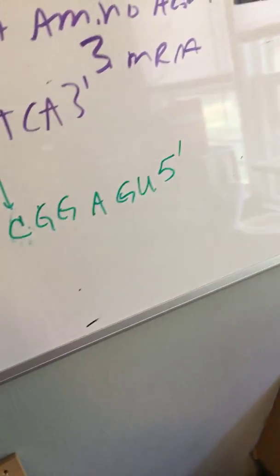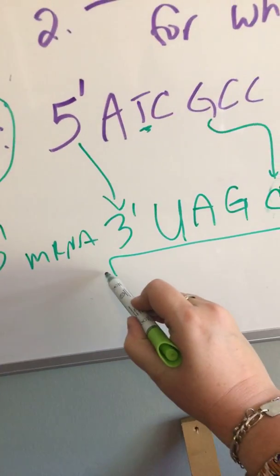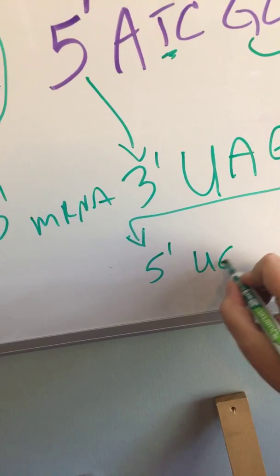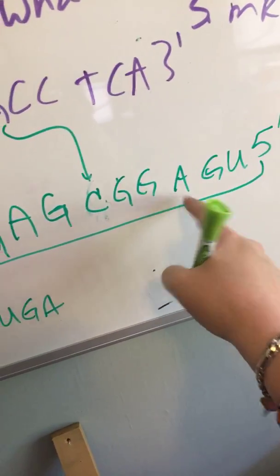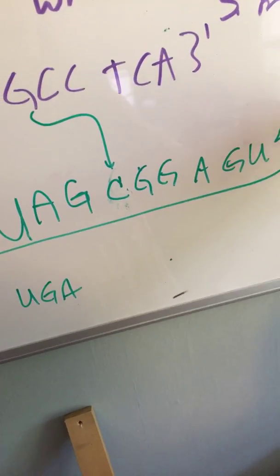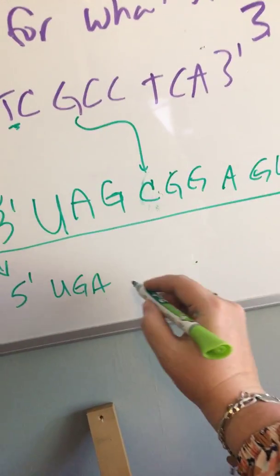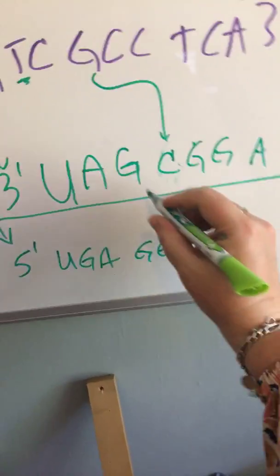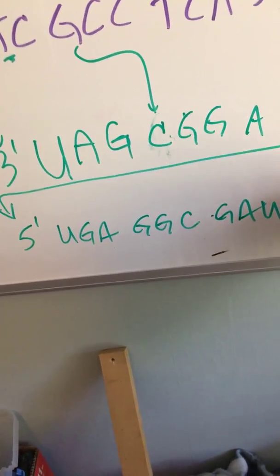Now, remember to read that table, we have to go 5' to 3', so we're going to flip it again. This is going to be 5' UGAGGCGAU 3' prime. We're just reading from right to left.